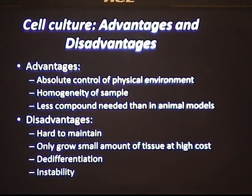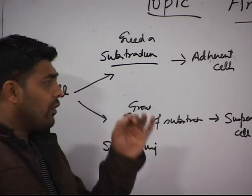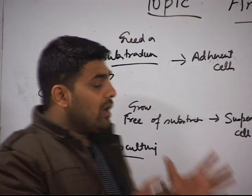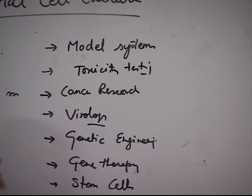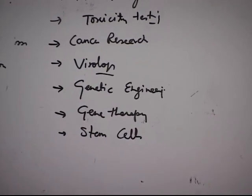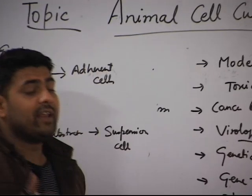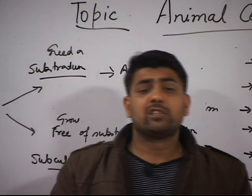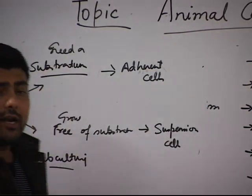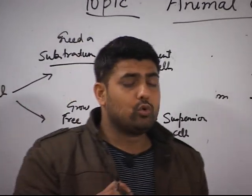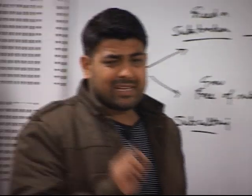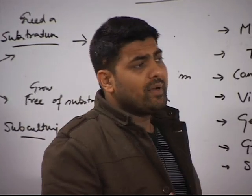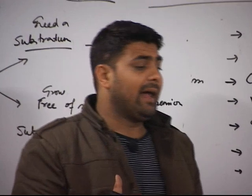Talking about advantages and disadvantages of animal cell culture: the advantage is you can control the conditions in which you want to grow the cells. The cells are homogeneous in nature, and when testing toxicity you are required to submit only a small amount of molecule compared to animal dosing. Disadvantages include the fact that they are hard to maintain, requiring specialized skill sets, specialized plasticware, and specialized lab conditions at very high cost. Additionally, cells growing in culture tend to de-differentiate, lose their homogeneity over time, and become unstable cultures.